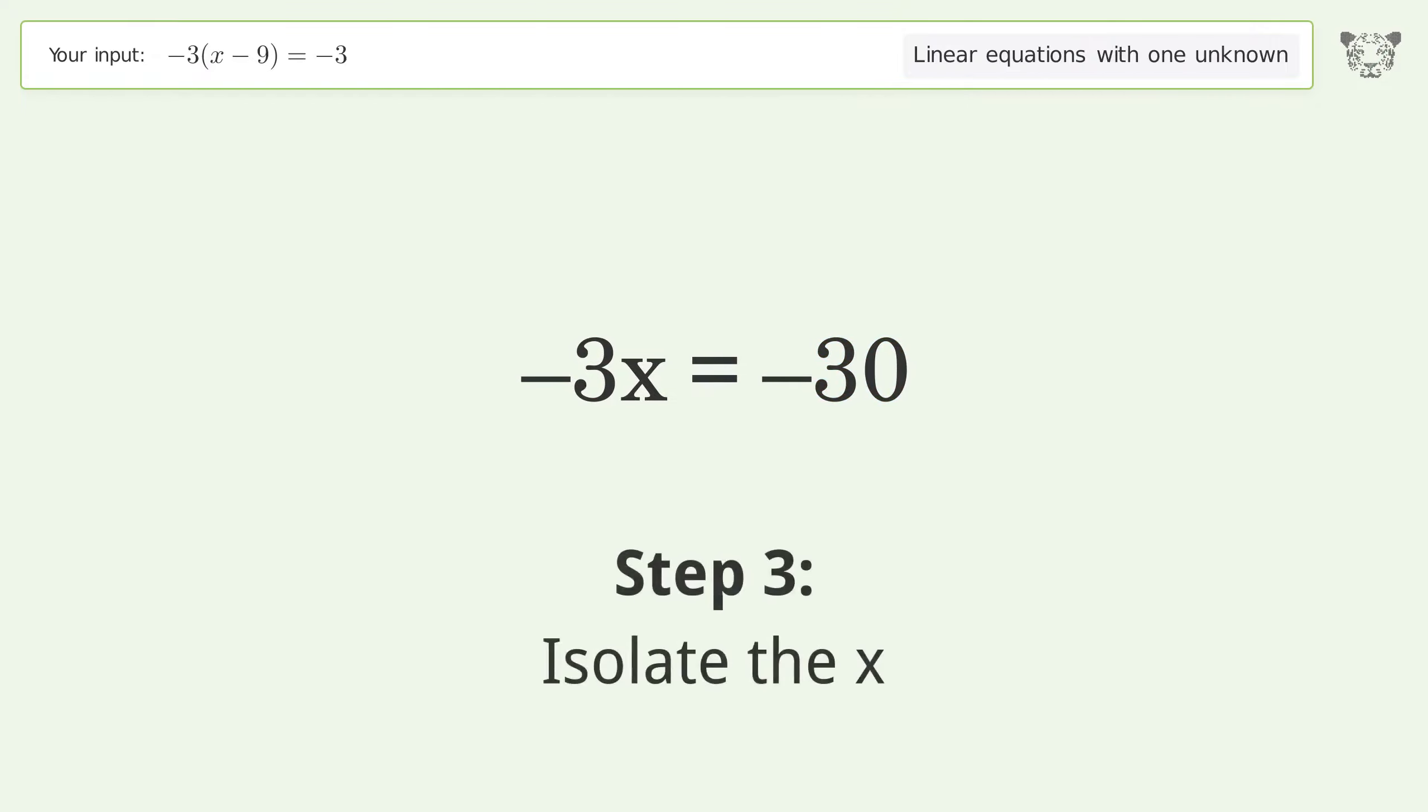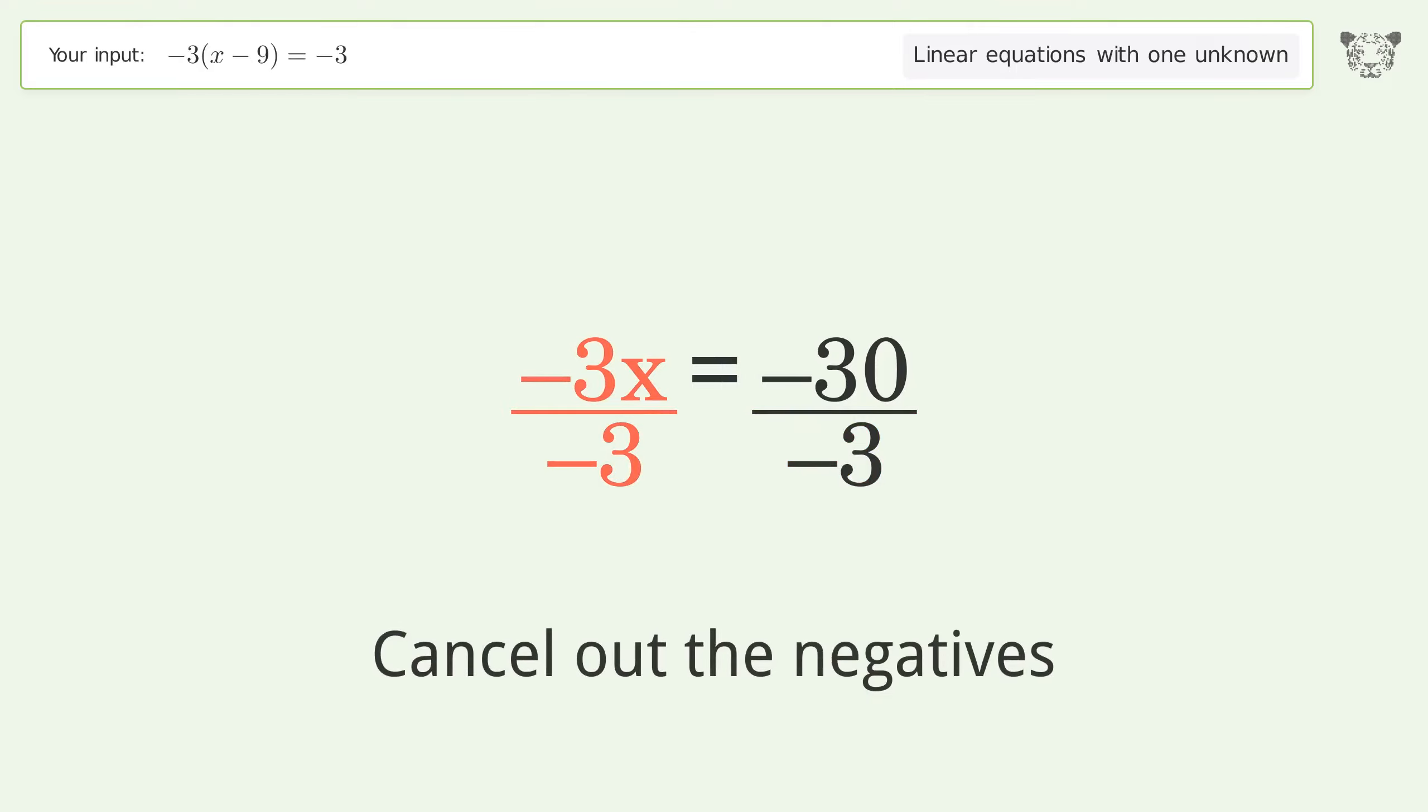Isolate the x. Divide both sides by negative 3, then cancel out the negatives.